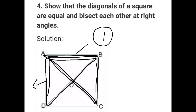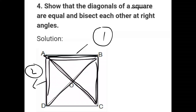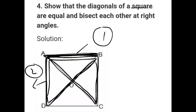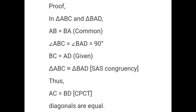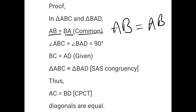So first of all, let's choose two triangles. We can write something — these are the same properties. First, AB is common. One line, two triangles share a common side. So we can write AB equals AB — this is common.